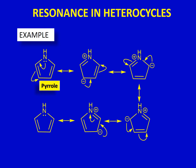Let's see how resonance is possible in these heterocyclic molecules. The first example is pyrrole. Nitrogen has only one lone pair, and on the adjacent carbon there is a p orbital that has formed a pi bond with another p orbital on the next carbon. This lone pair can delocalize and form a bond between the carbon and nitrogen. As a result, because that carbon can only form four bonds and already has three sigma bonds plus a pi bond, the weaker pi bond breaks.